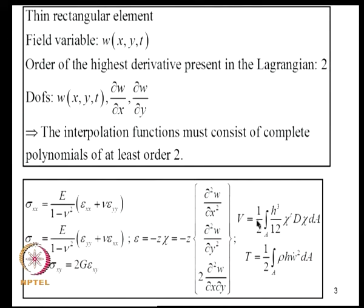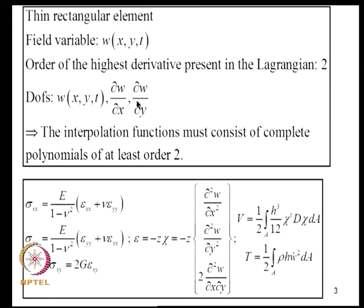We have considered two models. In the first model, we assume the plate to be thin, in which case the strain energy and kinetic energy expressions involve chi, the vector of curvatures ∂²W/∂X², ∂²W/∂Y², and ∂²W/∂X∂Y. The field variable is W, and the highest derivative in the Lagrangian is 2. Therefore, the degrees of freedom must include W, ∂W/∂X, and ∂W/∂Y — three degrees of freedom per node — and interpolation functions must consist of complete polynomials of at least order 2.